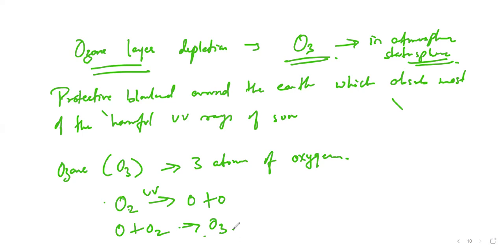If the UV is in more levels when it reaches the environment, it may cause certain diseases such as cancer or other skin diseases. Hence what this ozone layer does is it tries to absorb the UV radiation so that it will not reach the earth's surface.